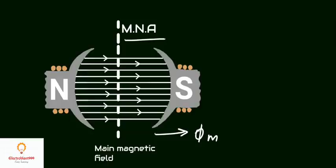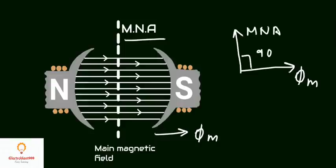Brushes are always placed along the MNA. Hence, MNA is also called the axis of commutation. The phasor diagram shows the main flux from north pole to south pole perpendicular to the MNA. This is the phasor diagram when there is only a main magnetic field.